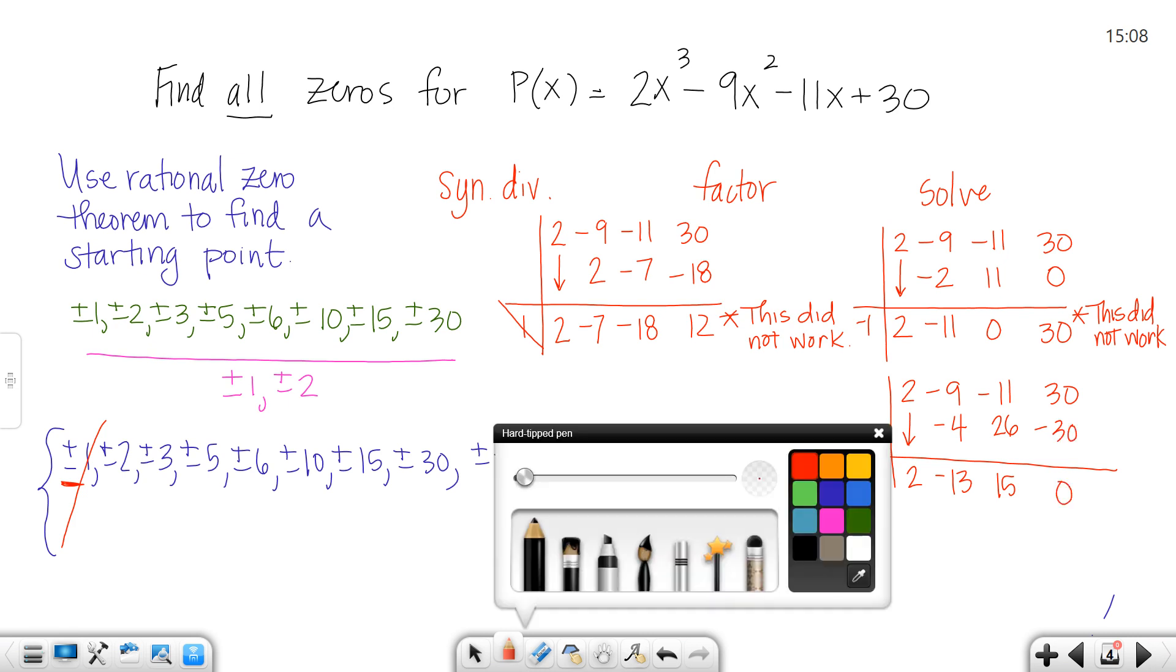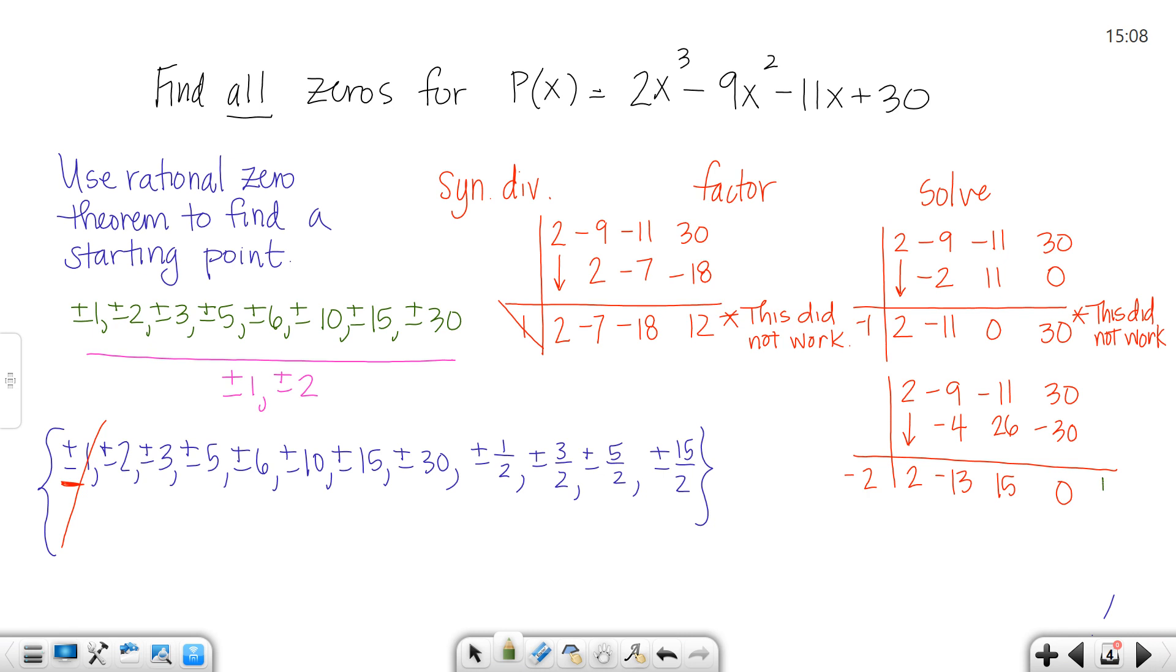Yay, it works! The reason I know it works is that the remainder is 0. If the remainder is 0, that means it divides evenly. So for this particular problem, one of the zeros is negative 2.